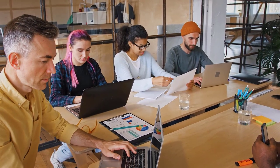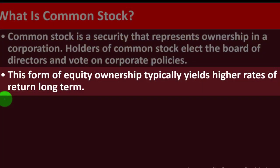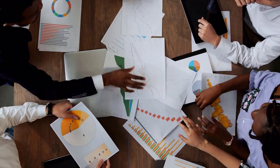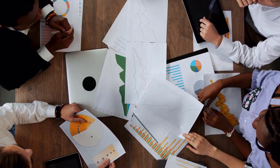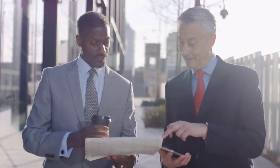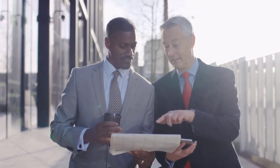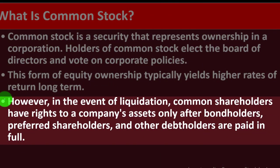Management should be making decisions that grow the company and make money. This form of equity ownership typically yields higher rates of return long term. When you compare investing in stocks versus other investments like bonds or savings accounts, stocks over the long term typically do better, although of course there's more risk involved.